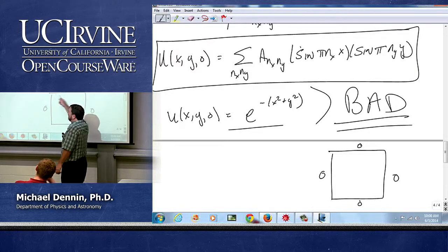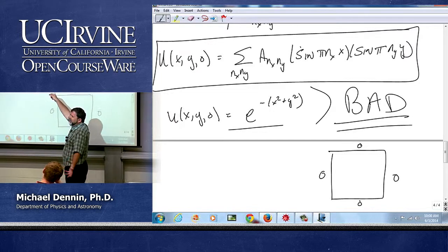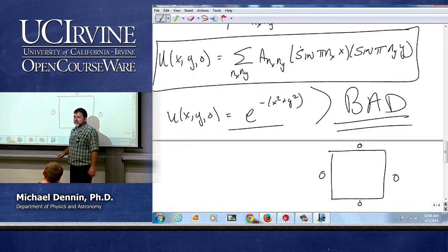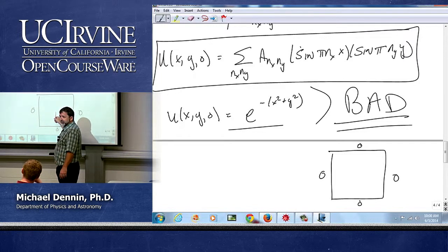It's supposed to be 0 on the boundaries and it's peaked here, and the exponential decays but not that fast. If I plotted that it's not even close to 0 on any of these boundaries, so the first thing I have to do is recenter it.